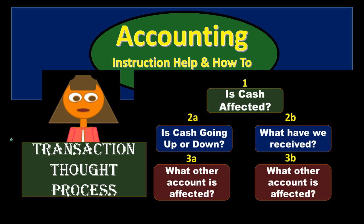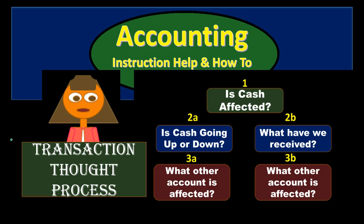Going through this system of questions will help us avoid learning rules that only apply sometimes. We always want to think of cash first because cash is going to be affected in about 75% of transactions, and when it is, it makes things much easier. It's easy to know if cash is going up or down and therefore apply our one rule to see if it's going to be debited or credited. Once we know that, it becomes a lot easier to know what happens with the second part of the transaction.